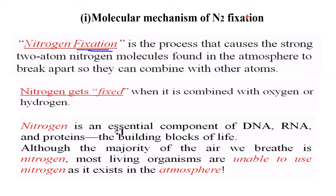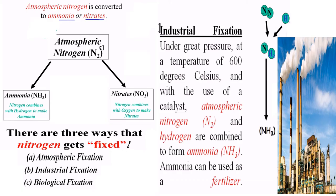So what is the molecular mechanism of nitrogen fixation? Nitrogen fixation is a process that causes the strong two-atom nitrogen molecule found in the atmosphere to break apart so that it can combine with other atoms. These nitrogen atoms get fixed when they combine with oxygen or hydrogen. The atmospheric nitrogen is converted into ammonia or nitrate — when atmospheric nitrogen combines with hydrogen it makes ammonium, and when it combines with oxygen it forms nitrate. These forms of nitrogen can then be utilized by plants.